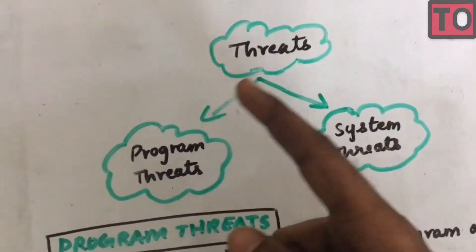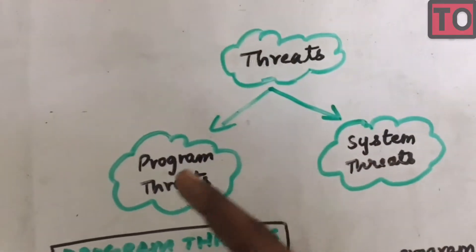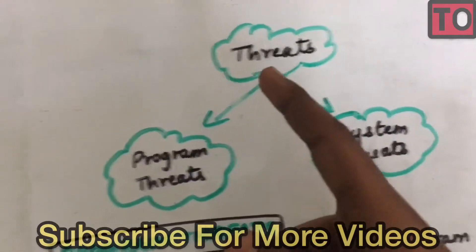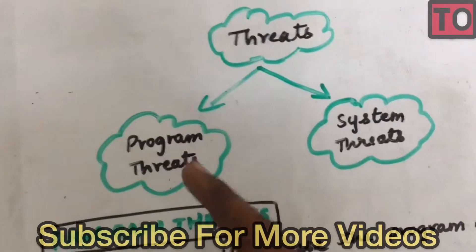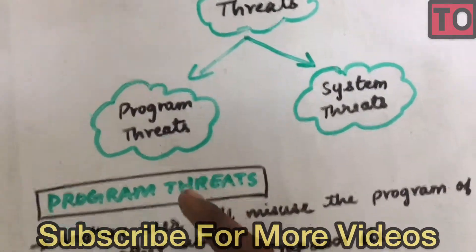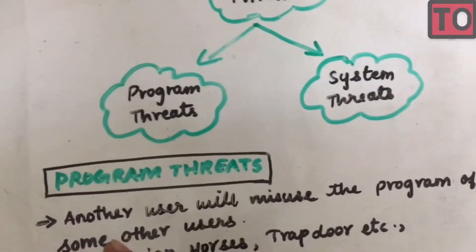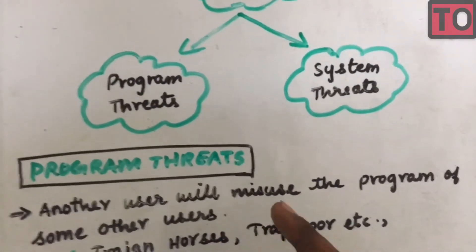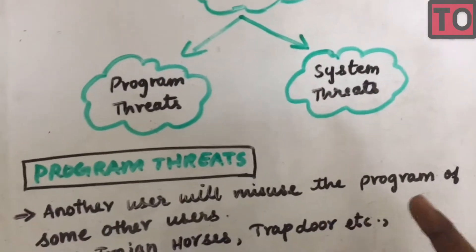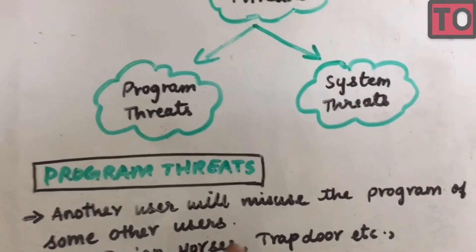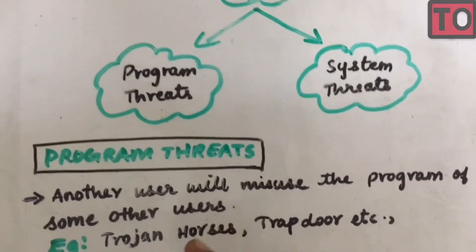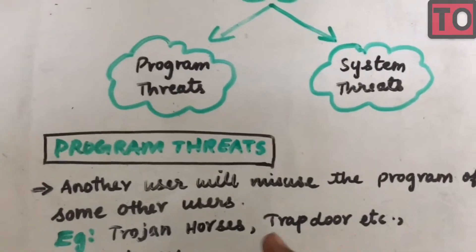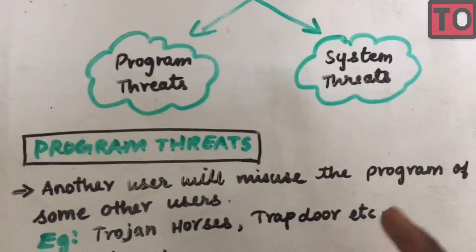There are two types of threats: Program threats and System threats. Program threats occur when another user misuses the program of some other user. Examples include Trojan Horses and Trap doors.